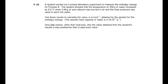Here's an exam question: a student carried out a simple laboratory experiment to measure the enthalpy change for a process. The student showed that the temperature of 200 grams of water increased by 8 degrees Celsius when 0.46 grams of pure ethanol was burned in air and the heat produced was used to warm the water. Use these results to calculate the value in kJ per mole obtained by the student for this enthalpy change. The specific heat capacity of water is 4.18 J per kelvin per gram. Give one reason other than heat loss why the value is less than the data book value.